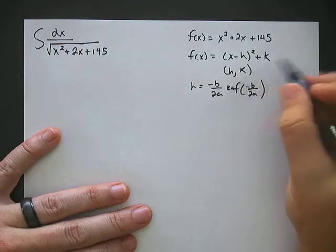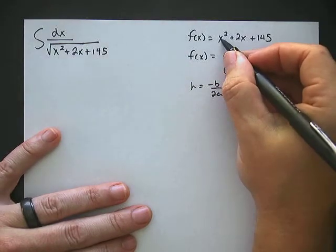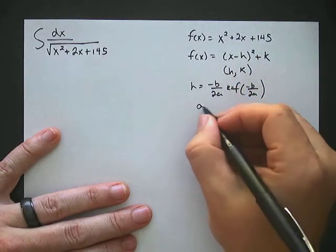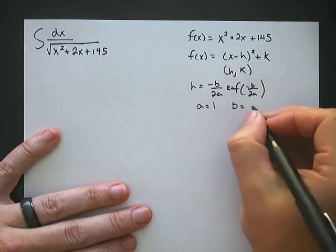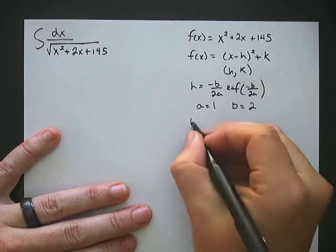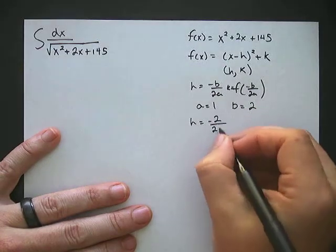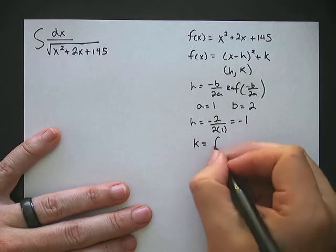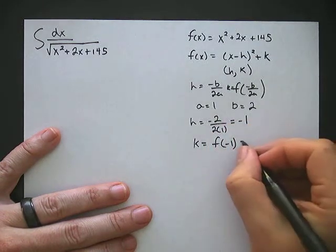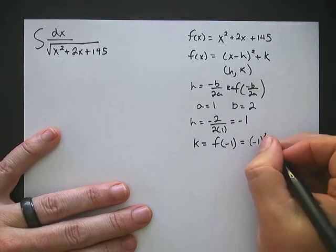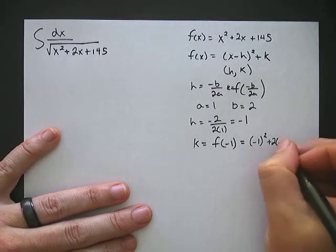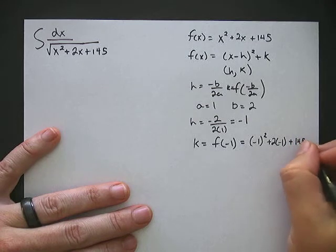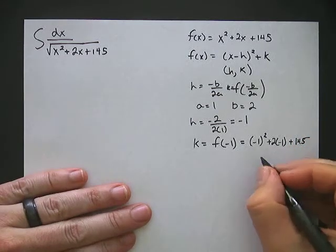Where do a and b come from? That comes from the standard form of a quadratic, ax squared plus bx plus c. So a is equal to 1, b is equal to 2. So h is equal to negative 2 over 2 times 1, which is negative 1. And k is equal to f of negative 1, so we plug in: negative 1 squared plus 2 times negative 1 plus 145, which gives us 144.